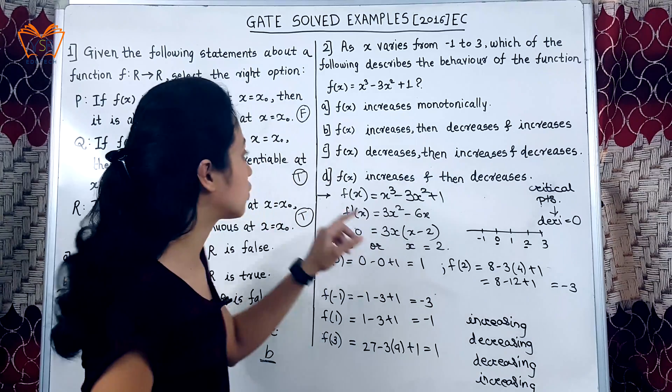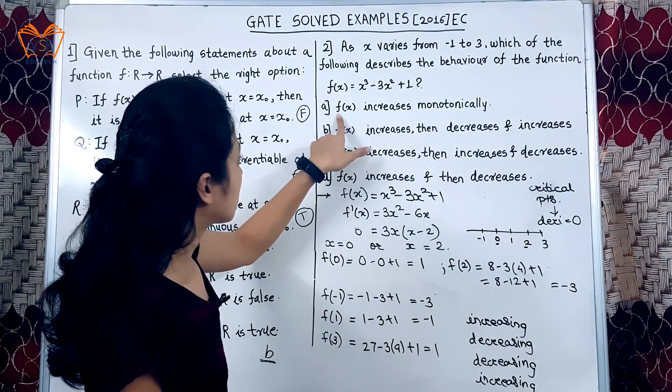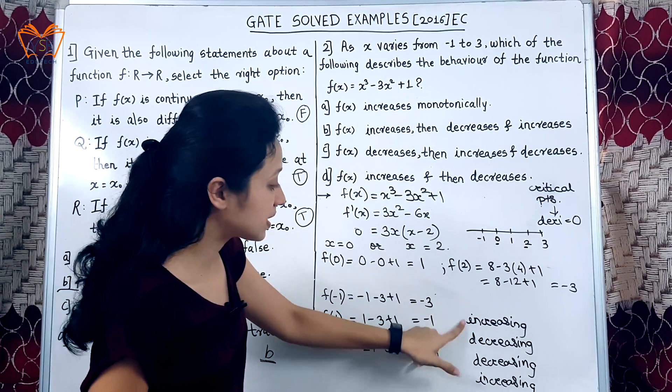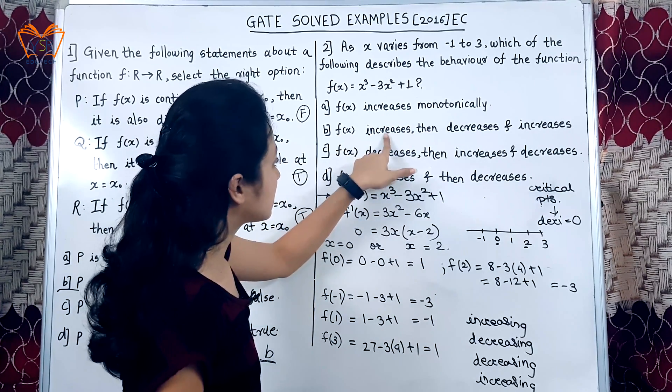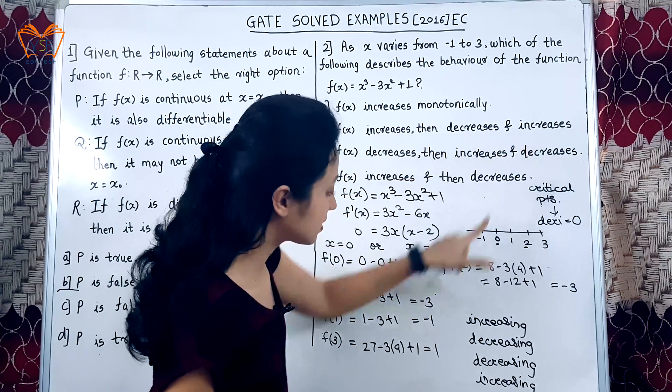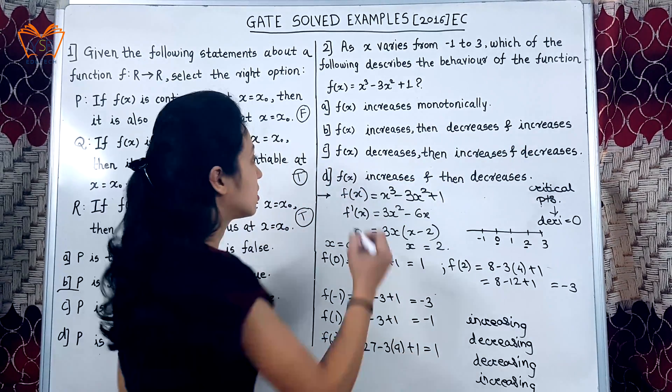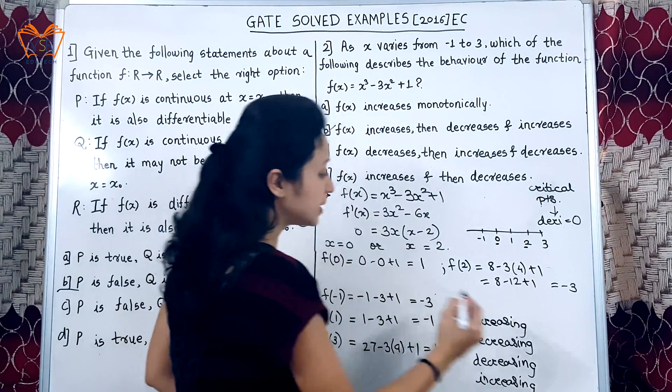Now let us compare with one of the options. F of x increases monotonically. This is absolutely wrong because we are getting the change in the function. F of x increases, decreases, increases. Let us compare with the options. Yes, it is increasing, decreasing and increasing. So, option B is correct.